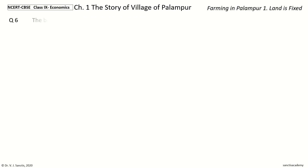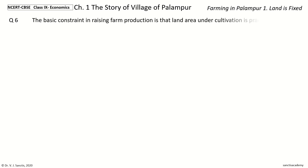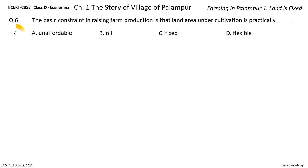Question 6: The basic constraint in raising Farm Production is that Land Area under Cultivation is practically Dash. The options are Unaffordable, Nil, Fixed, Flexible. Your time to choose. And the answer is Fixed. So, the basic constraint in raising Farm Production is that Land Area under Cultivation is practically fixed.